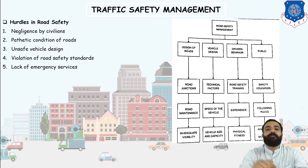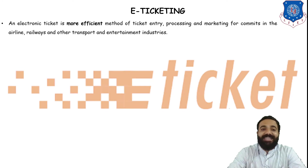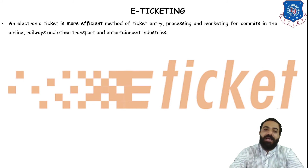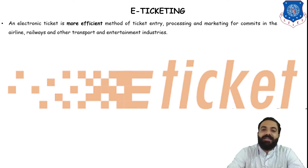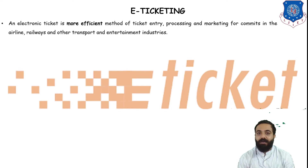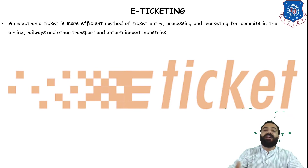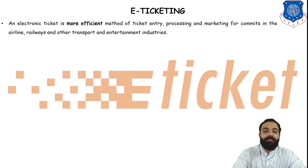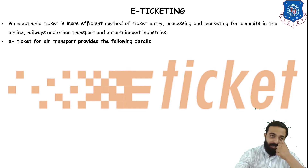An electronic ticket (e-ticket) is a more efficient method of ticket entry and processing for the airline, railway, and other transport and entertainment industries. You can easily book a ticket using an application. E-ticketing is used in airline, railway, and other transportation systems as well as entertainment industries.